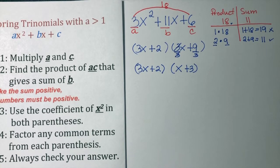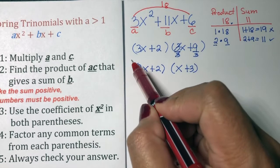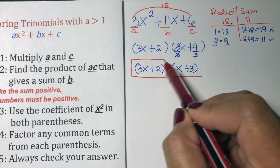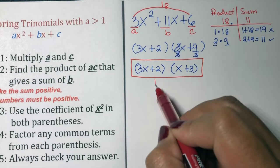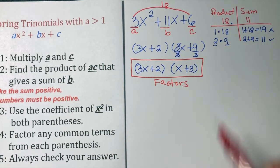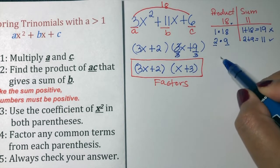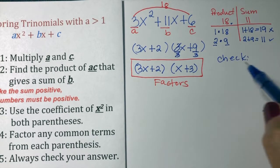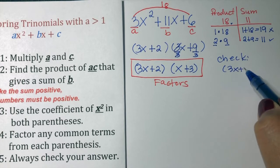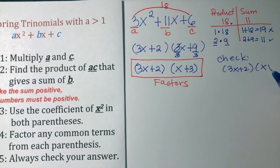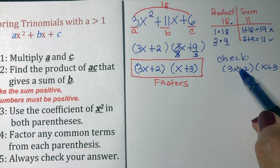The factors of 3x squared plus 11x plus 6 are (3x + 2)(x + 3). How would you know if your answer is correct? We need to follow the last step: always check your answer. Let us check by multiplying 3x plus 2 times x plus 3. You can use any method like FOIL, distribution, or box method, but let us use FOIL.